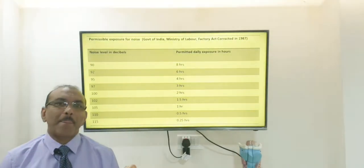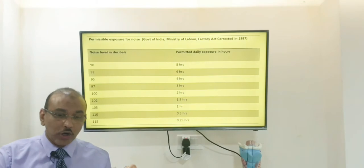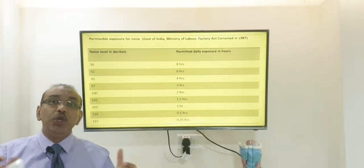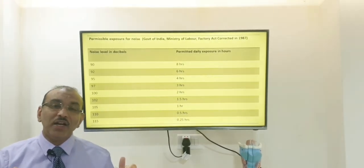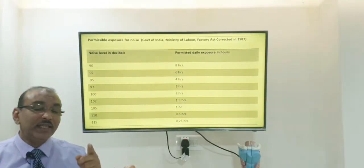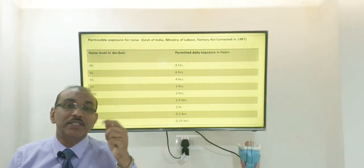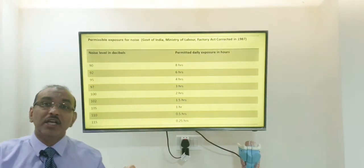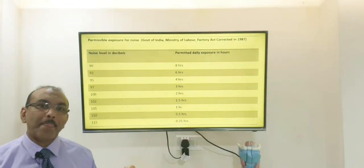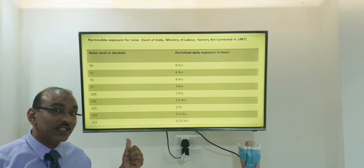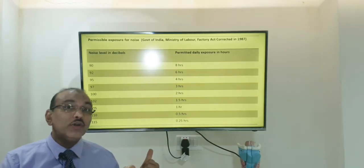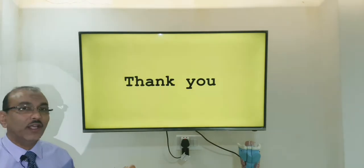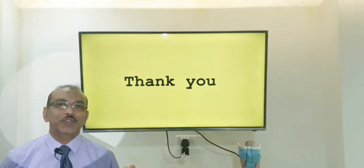Modern Android phones with Dolby and dual speakers can produce more than 80 decibels. Just imagine children using earphones at 80 decibels for many hours. Noise induced hearing loss starts at 85 decibels, and the phone is already producing more than 80 decibels. It's better to check your phone's sound level settings. That is in short about noise induced hearing loss. Thank you.